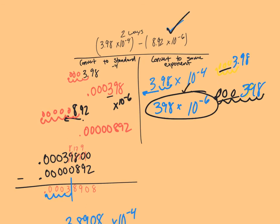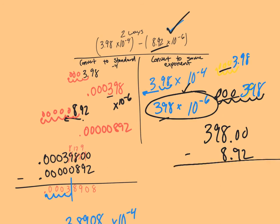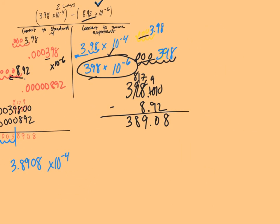Now since I have both numbers in the negative sixth, I can just subtract away my bases. I have a base of 398 and a base of 8.92. I'm going to put the larger base on top: 398, and the lower base on the bottom: 8.92. Lining up decimals and adding space savers. I need to borrow from the 8 to get 7, making the next digit 10, then borrowing again: 10 minus 2 is 8, 9 minus 9 is 0, borrowing to get 17 minus 8 is 9, 8 minus 0 is 8, 3 minus 0 is 3. Bringing my decimal straight down.